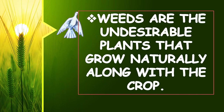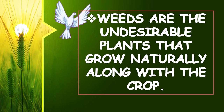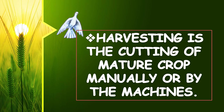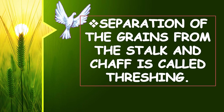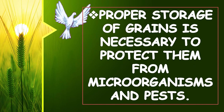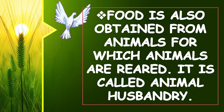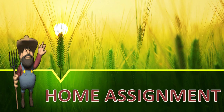Weeds are the undesirable plants that grow naturally along with the crop. The removal of weeds is called weeding. It can be done manually or with the use of weedicides. Harvesting is the cutting of a mature crop manually or by machines. Separation of grains from the stalk and chaff is called threshing. Proper storage of grains is necessary to protect them from microorganisms and pests. Food is also obtained from animals, for which animals are reared — this is called animal husbandry.